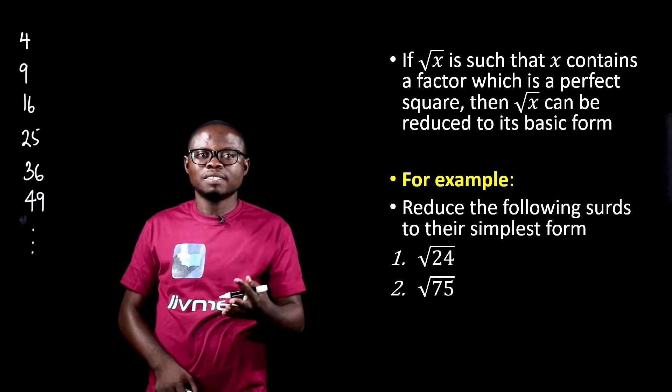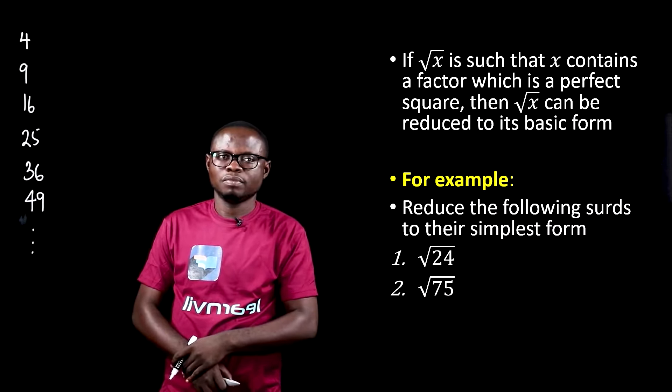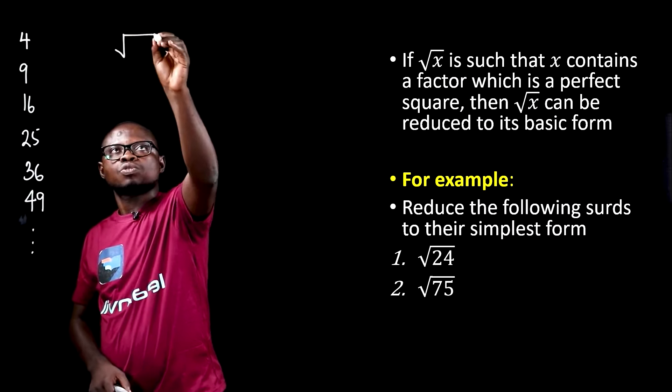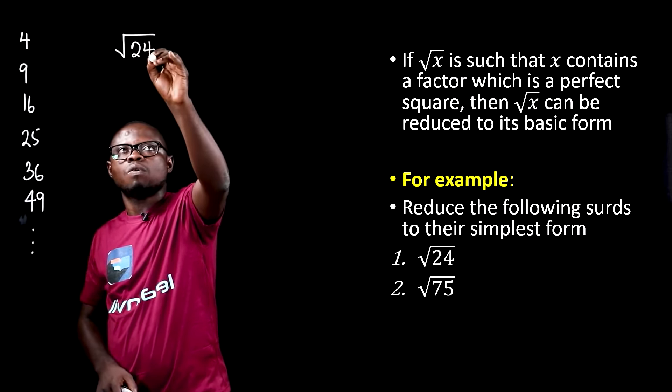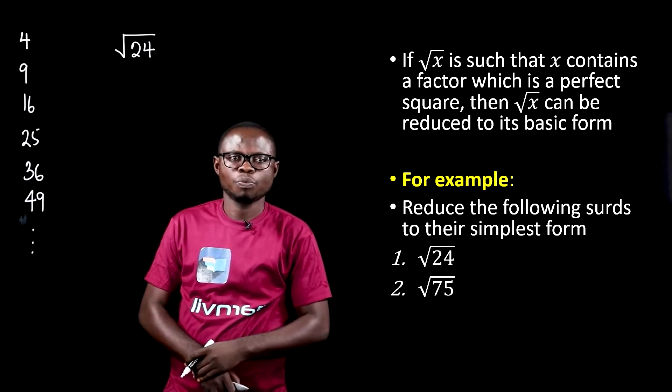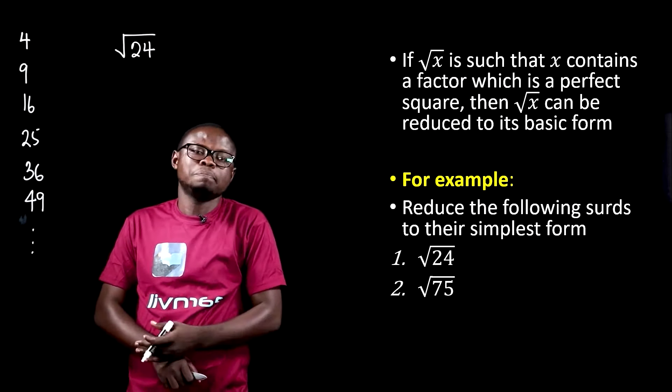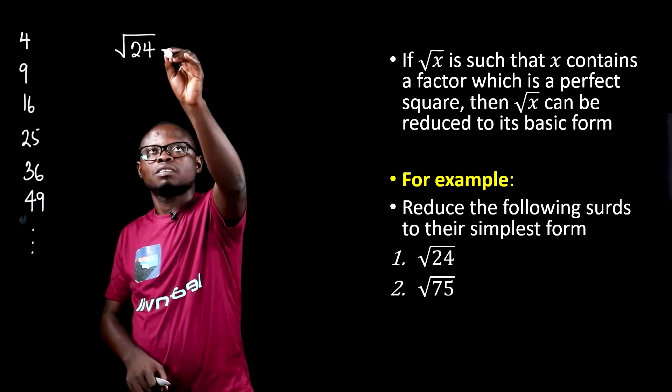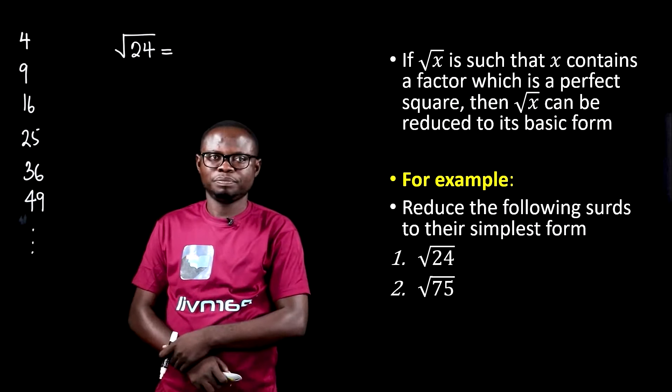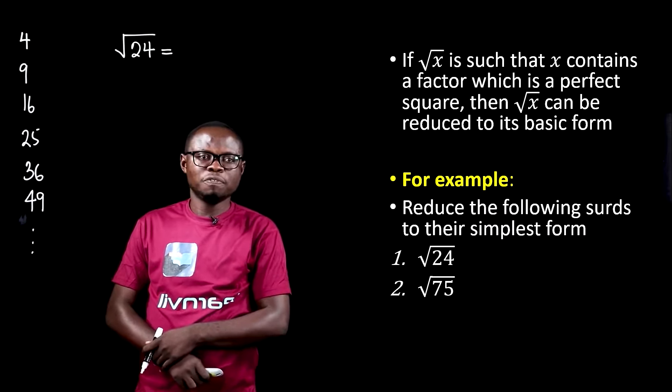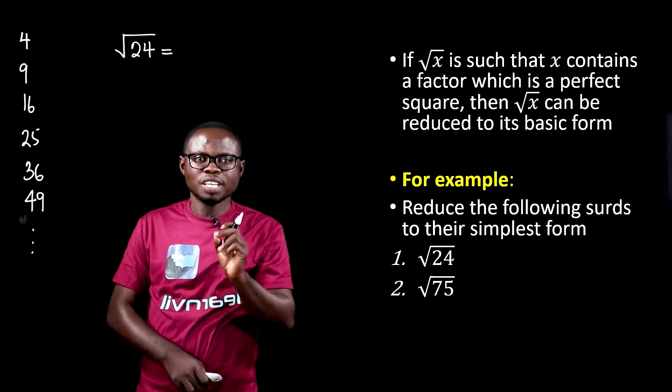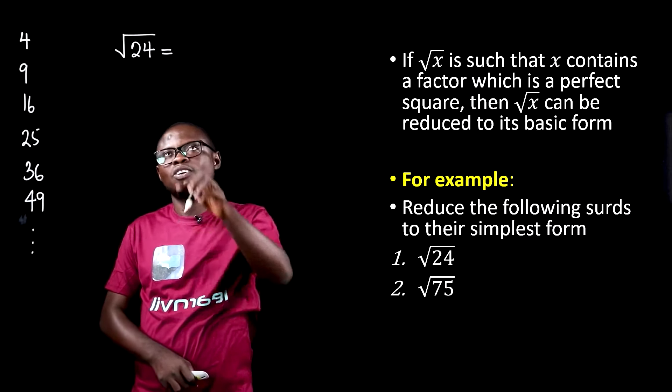If you are given a surd, for example, square root of 24, to reduce to its simplest or basic form, you have to find one of these squared numbers which is a factor of 24. Can you guess that squared number?